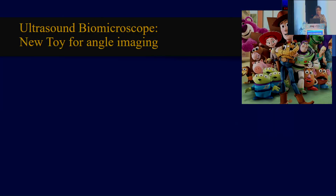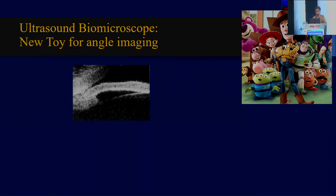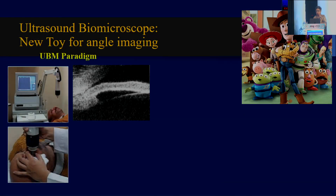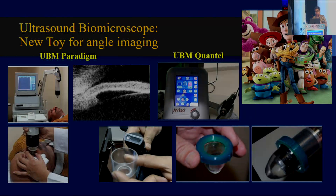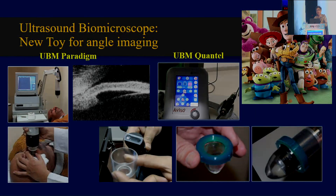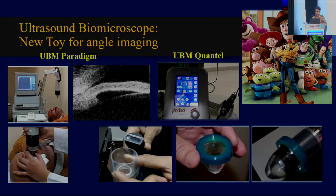UBM was really a new toy which came to us for angle imaging. We started work with the Paradigm, which sadly went out for a while, and then now we've got the Quantel, and since the last decade, this is the really go-to UBM — 50 MHz — which we've been using.